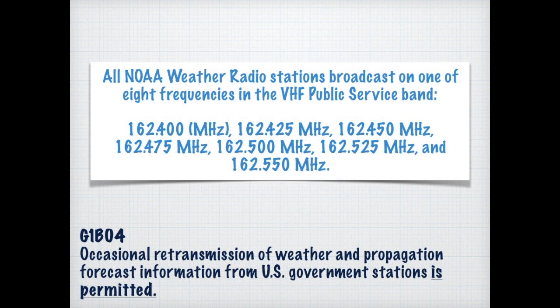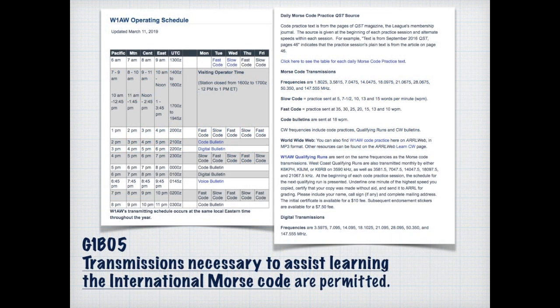One of the things we're allowed to retransmit occasionally is weather and propagation forecast information that comes from United States government stations. So if you have a NOAA weather radio, you're periodically allowed to retransmit the forecast, particularly if a hurricane is on its way. Another transmission we're able to do is one that can assist with learning Morse code — there is actually an ARRL broadcast for this, and you can find the schedule on their website.